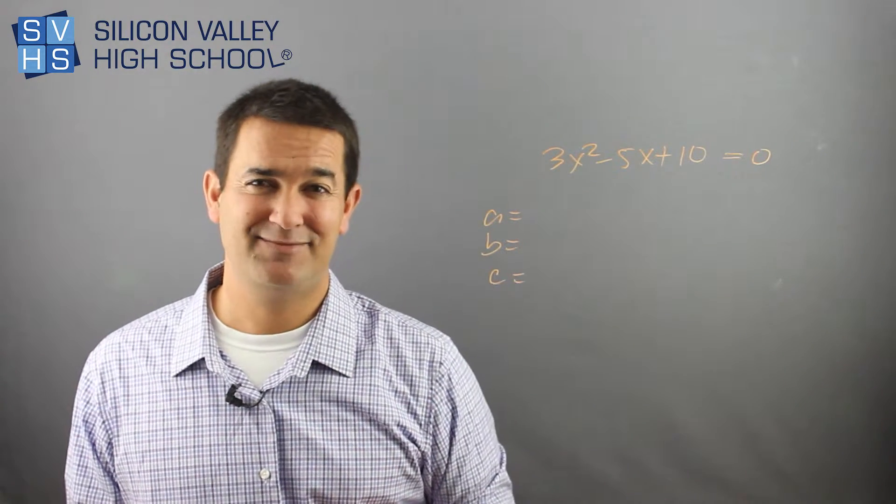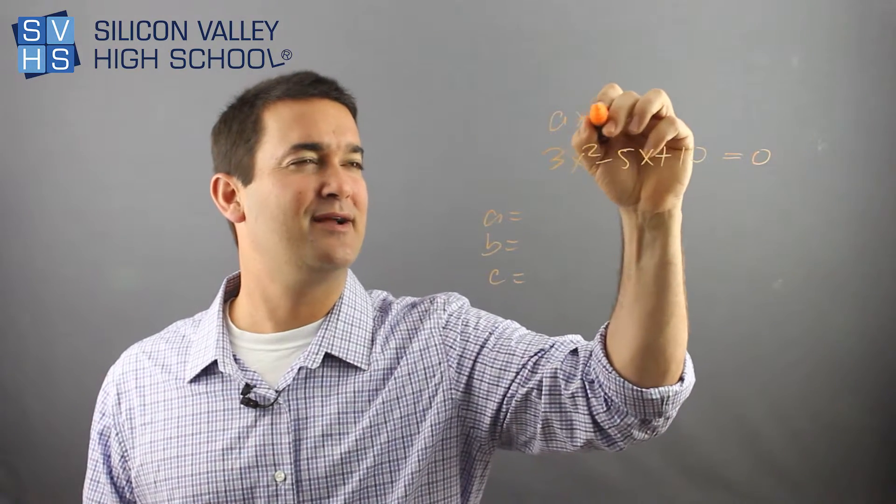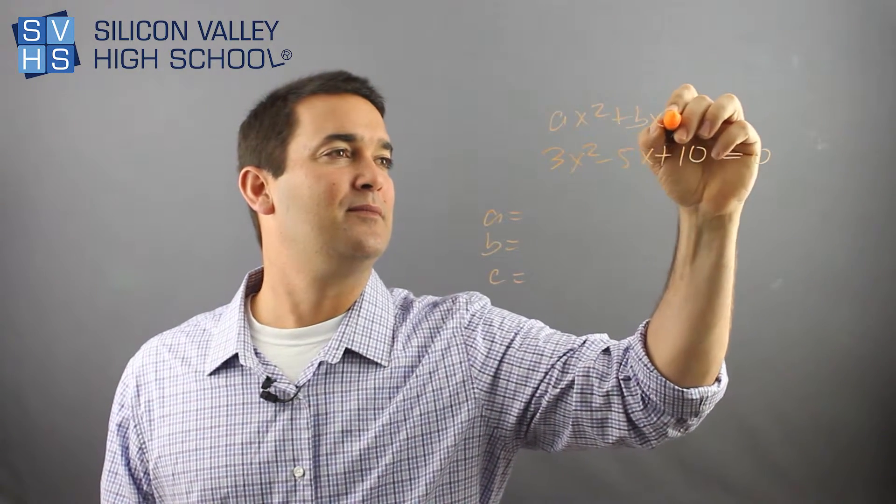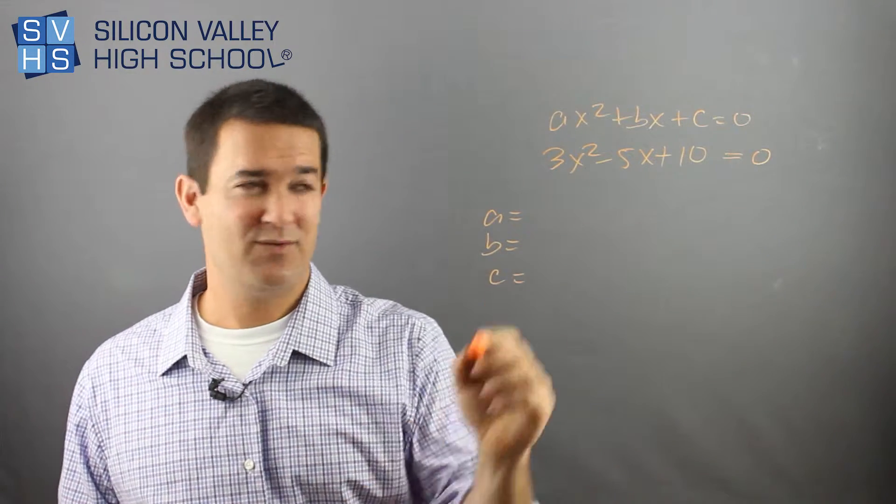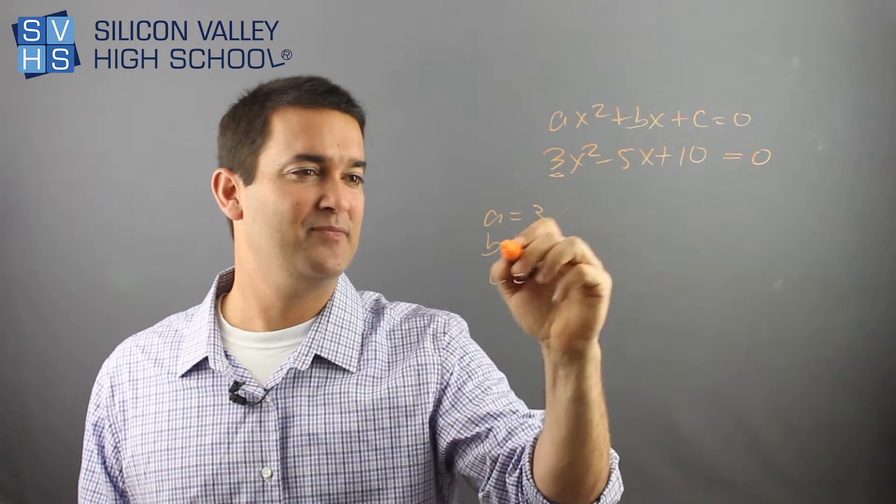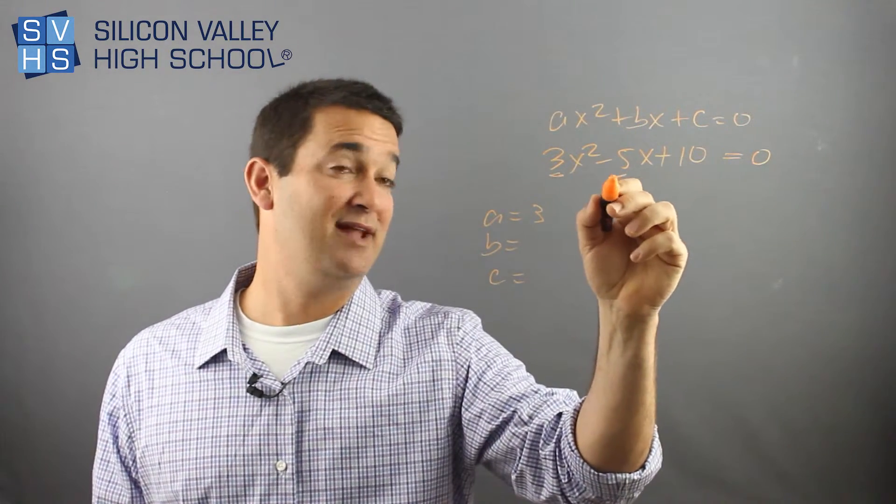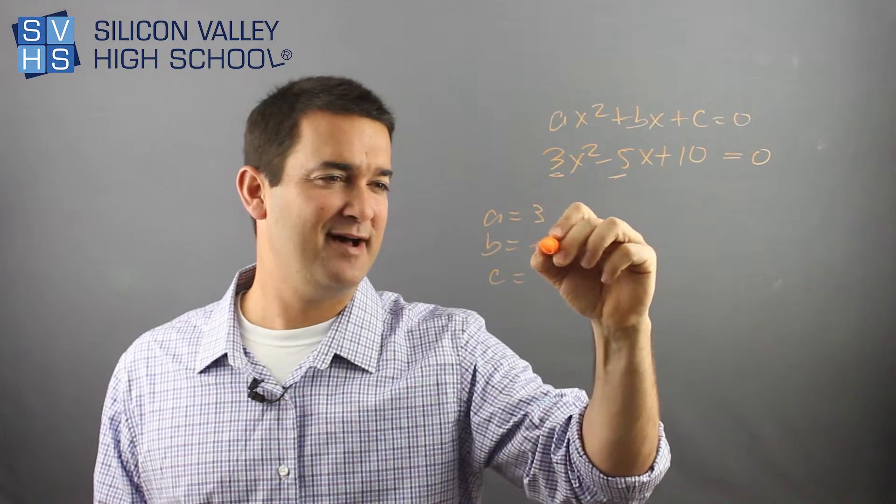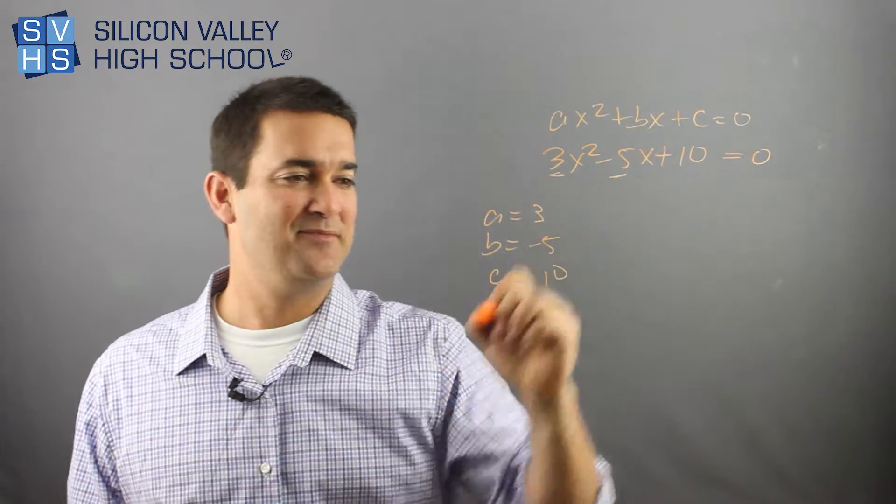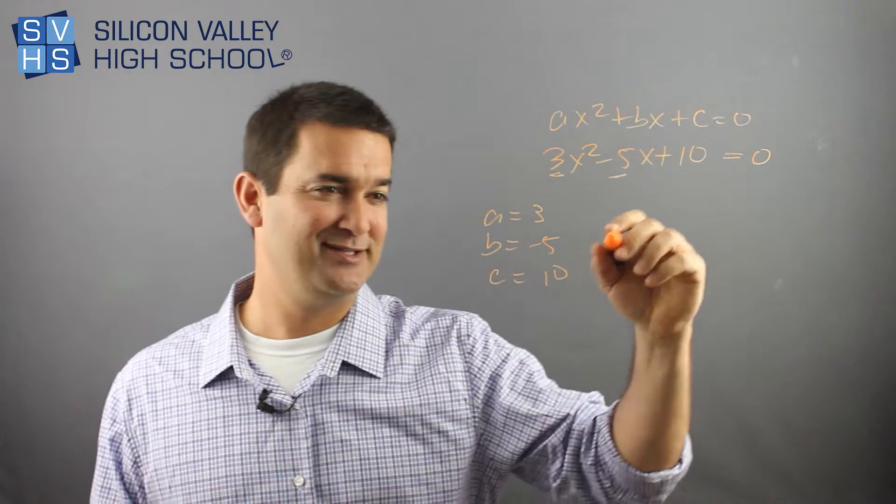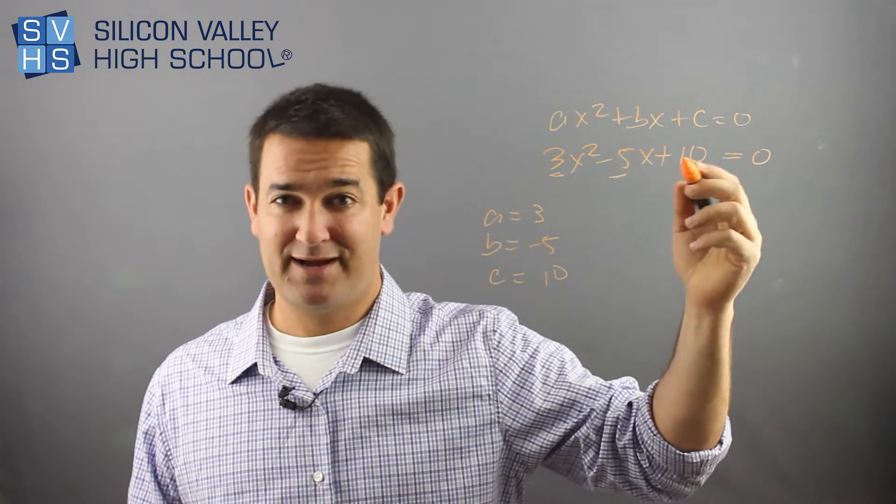What is a in this case? Remember, it's whatever, I'll write it right here, plus c equals zero. It's whatever's in front of the x squared. So a would be 3. b, in this case, would be not 5. b would be negative 5. And c, in this case, would be 10. And then, again, I'm not going to totally do it...